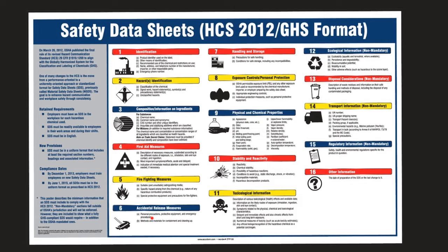Number six is called accidental release measures — that's just fancy for if we spill it, how do we clean it up. Some things you have to be very careful about how you clean up. Number seven: how do you handle it, how do you store it. Number eight: exposures — what kind of personal protection do you need? Do you need gloves, goggles, a respirator because the vapors are so bad to breathe in?